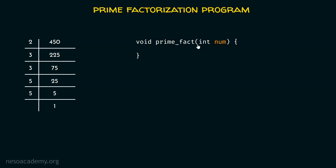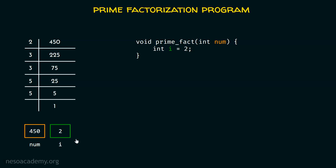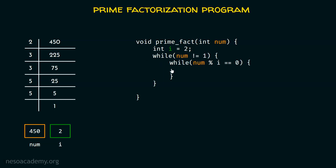In this prime_fact function, you can see the parameter int num. This prime_fact function will receive some value — the value for which we have to find the prime factors. Since we are considering this example, the num variable will receive value 450. After this, there is a requirement of another variable. We have to divide this number by 2, so we need a variable to store the value 2. This is the variable i, initialized to 2. Now, a loop is required because this division process continues. We need a nested while loop.